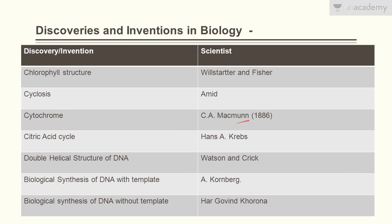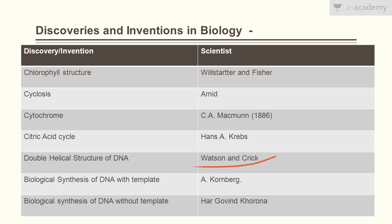The citric acid cycle was discovered by Hans A. Krebs, thus it is also known as the Krebs cycle. The double helical structure of DNA was discovered by Watson and Crick.